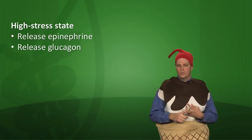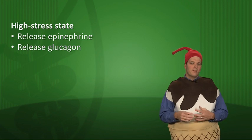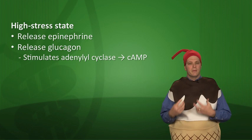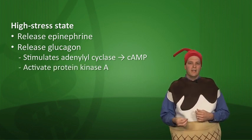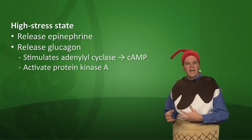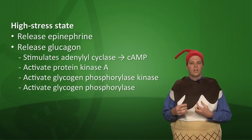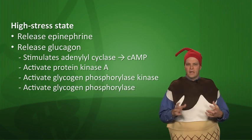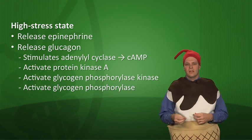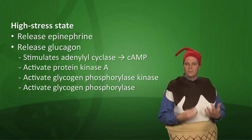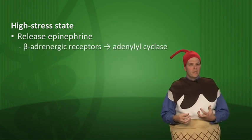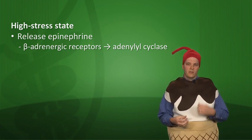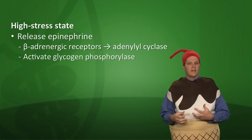In a high-stress fight-or-flight state, you need to share glucose. The body releases epinephrine and glucagon — counter-regulatory hormones that do the opposite of insulin. Glucagon stimulates adenylyl cyclase in hepatocytes to make cyclic AMP, activating protein kinase A, which activates glycogen phosphorylase kinase, which in turn activates glycogen phosphorylase — stimulating glycogenolysis and raising blood sugar. Epinephrine does basically the same thing: beta-adrenergic receptors are Gs receptors that also stimulate adenylyl cyclase, activating glycogen phosphorylase.